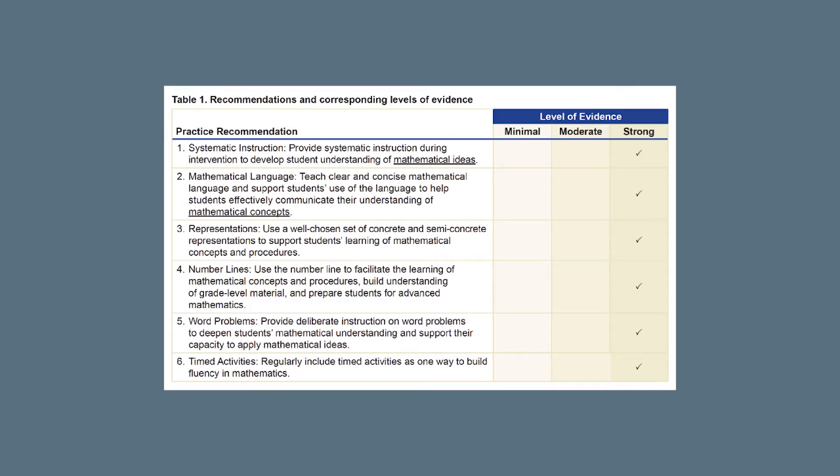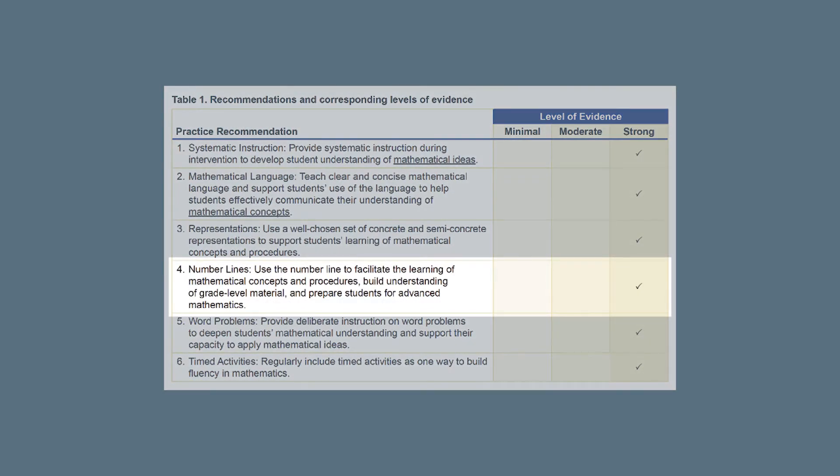Recommendation 4 of the What Works Clearinghouse Practice Guide, Assisting Students Struggling with Mathematics: Intervention in the Elementary Grades, is about using the number line to facilitate the learning of mathematical concepts and procedures, to build an understanding of grade level material, and to prepare students for advanced mathematics. The WWC and expert panel assign a strong level of evidence to this recommendation, meaning there is consistent evidence that meets WWC standards and indicates that the practice improves outcomes for diverse student populations.